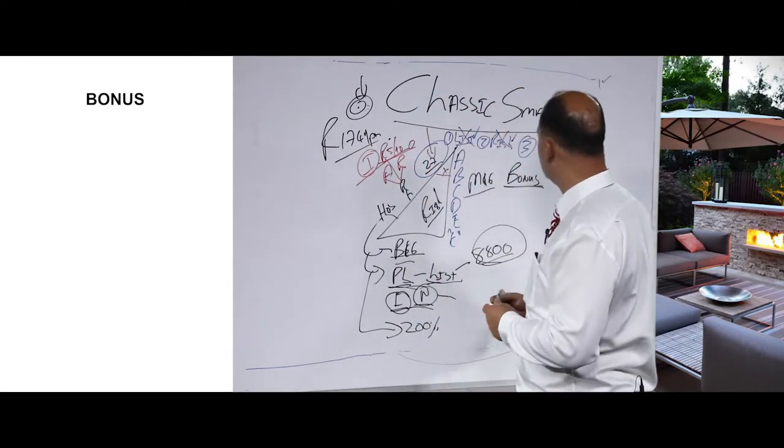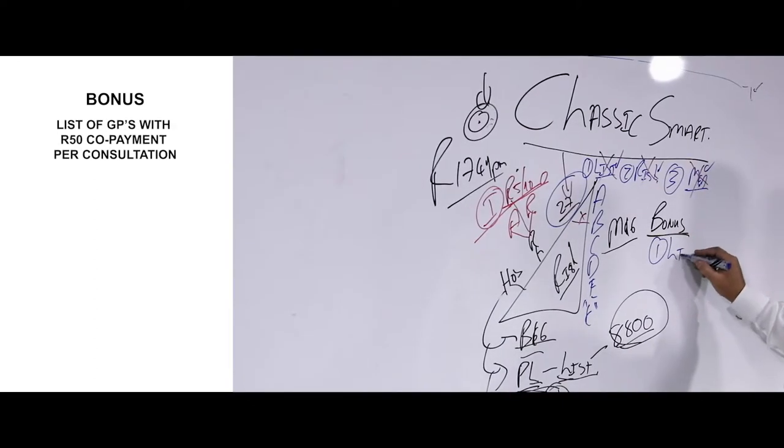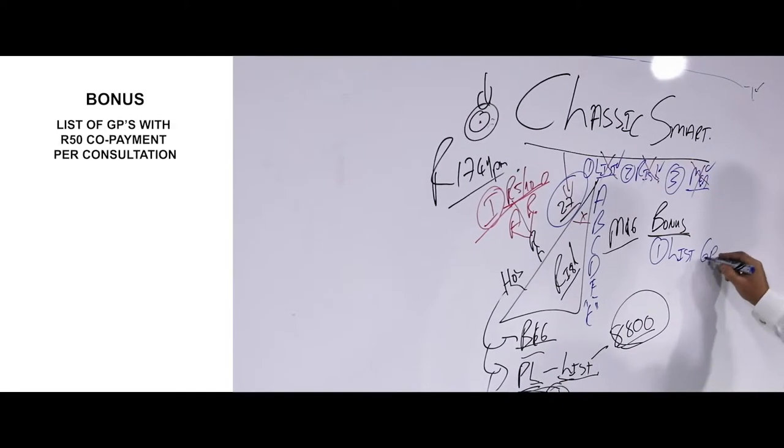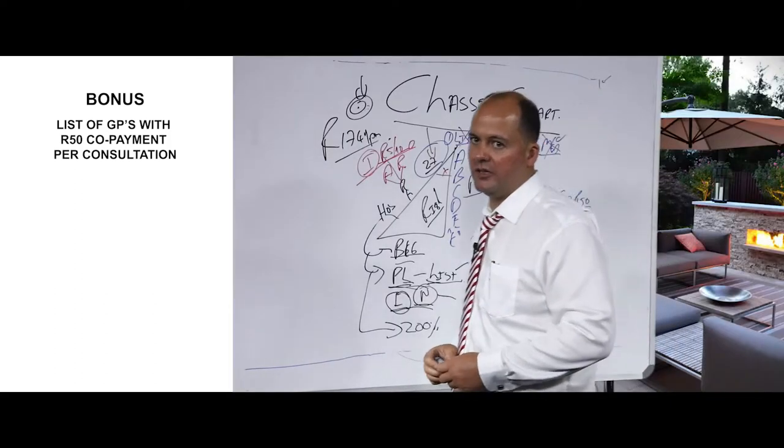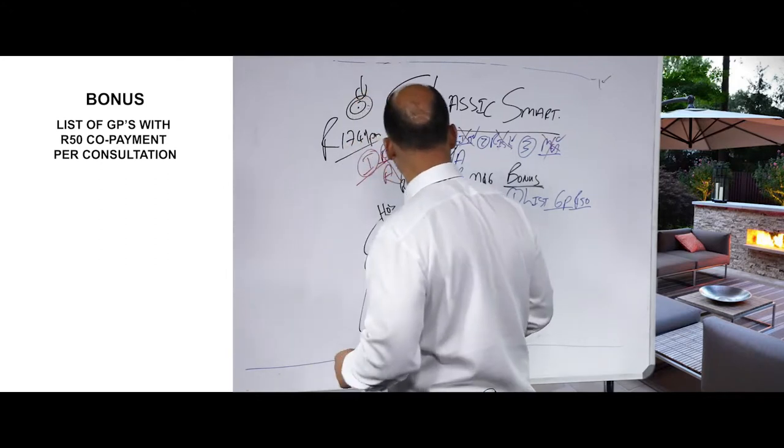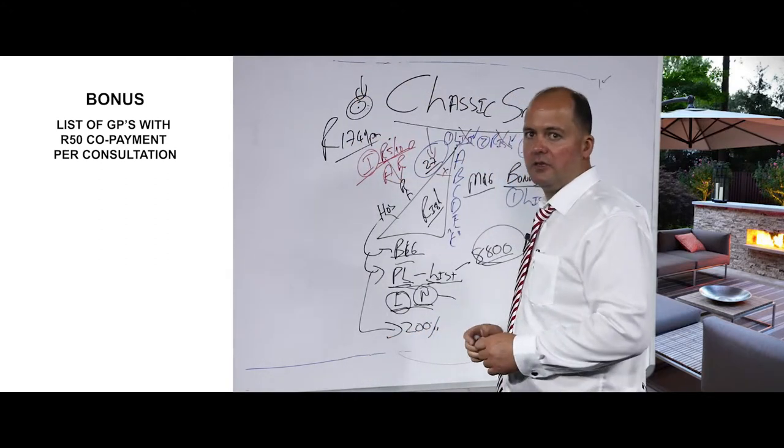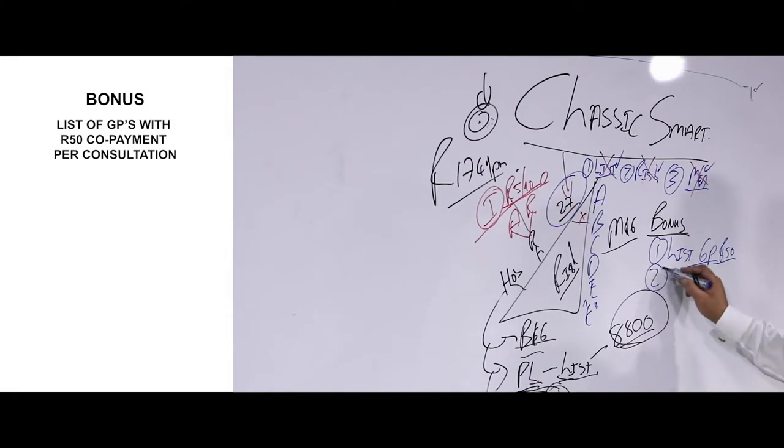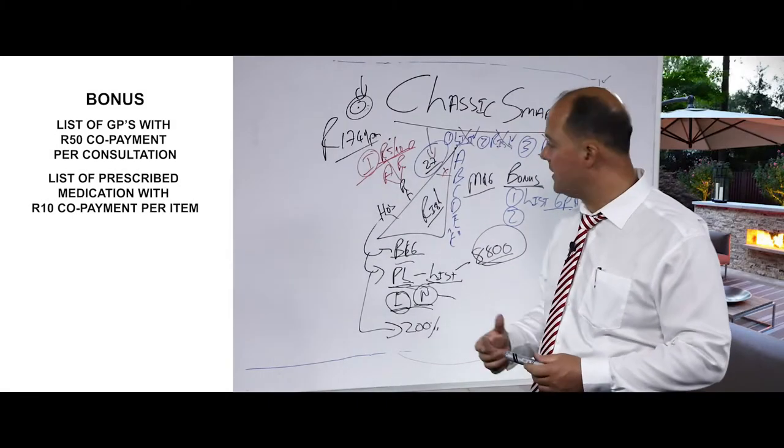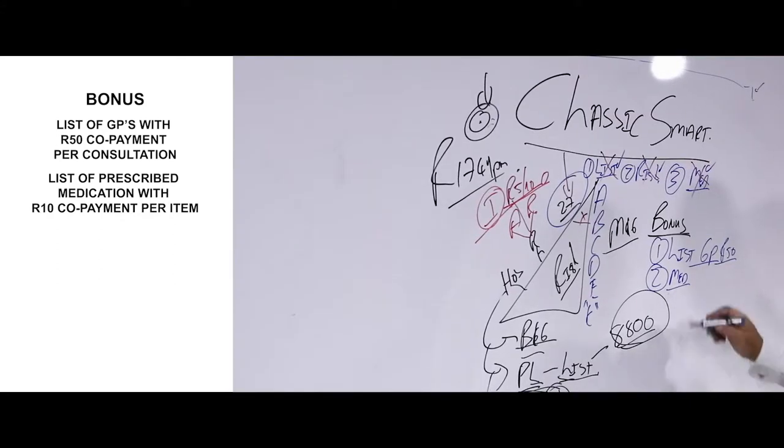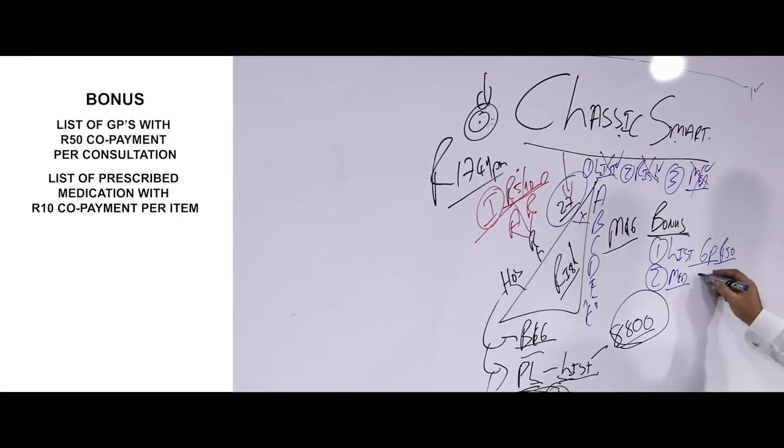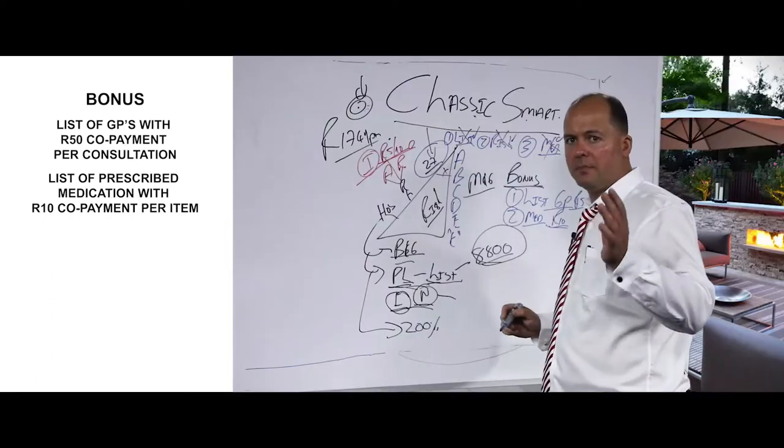So as a bonus, this plan provides you with, one, a list of GPs. A list of GPs with a 50 rand co-payment per consultation. So you can go to a list of GPs, 50 rand co-payment per consultation. And then that GP has got a list of prescribed medication. So if he prescribes you medication according to his list, you can take that prescription to a Classic Smart Plan pharmacy and you'll pay a 10 rand co-payment per item on the prescription.